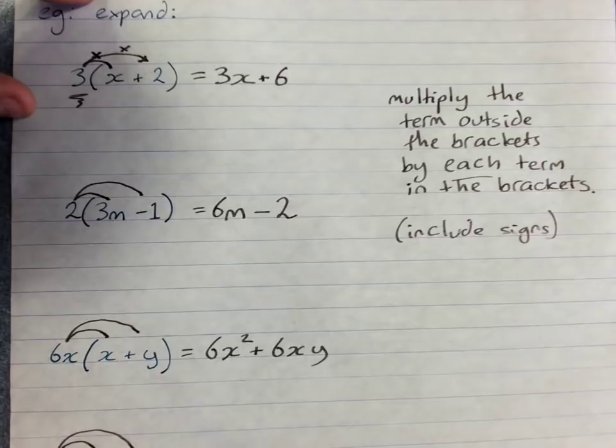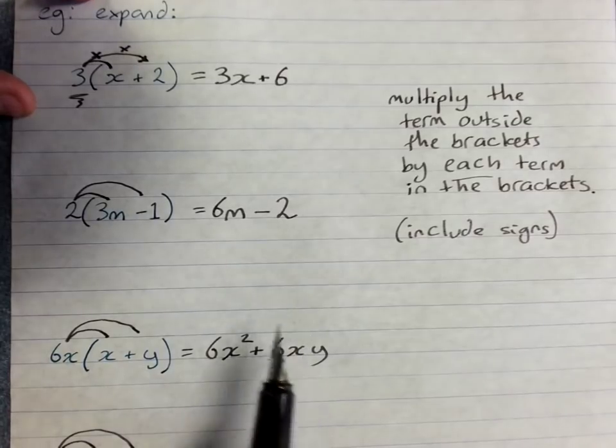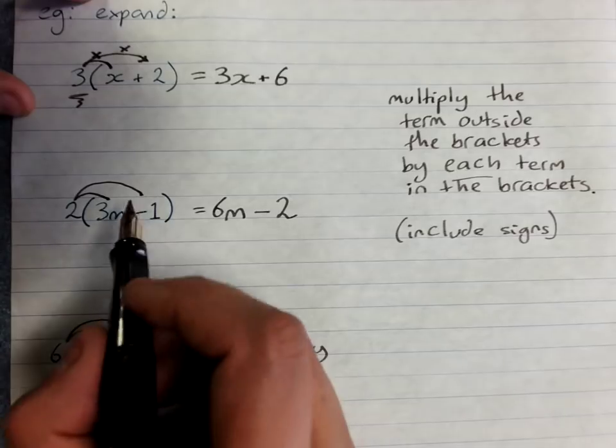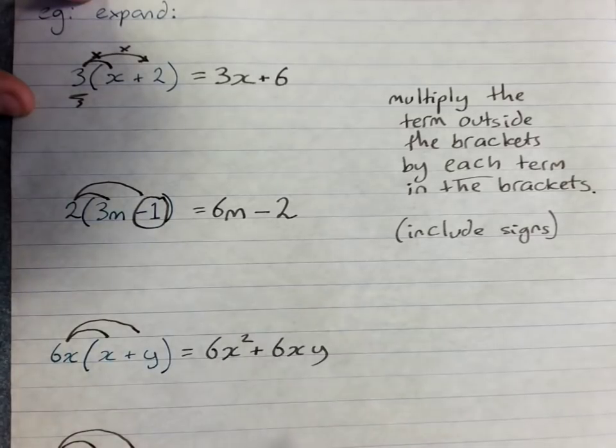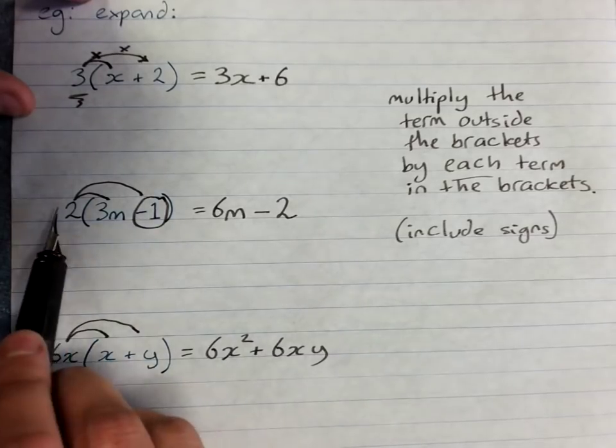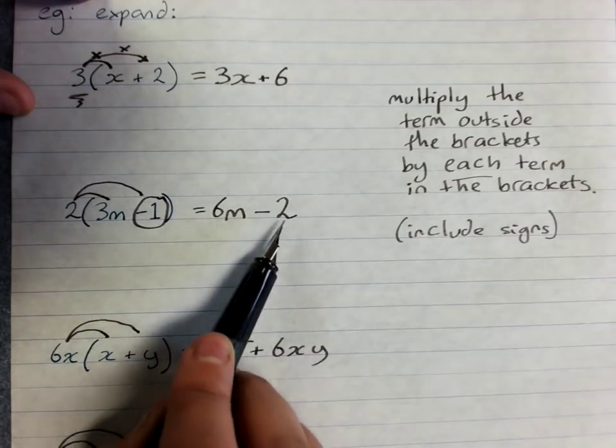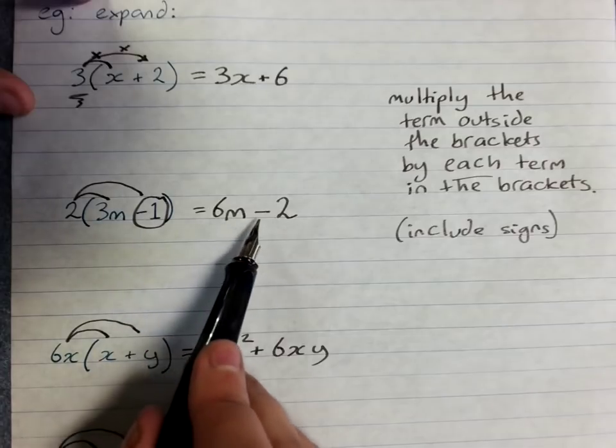So you'll remember that we talked about if I see a negative, that belongs to the number after it. This is a negative 1 in this situation. That's why I did 2 times negative 1 which gave me negative 2, and I get 6m minus 2.